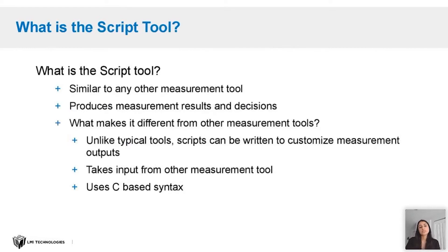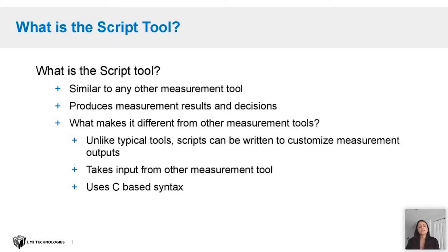So what is a script tool? A script tool is very similar to any other measurement tool we've seen or used in the GoCator interface. It produces measurement results and decisions. However, there is a key difference between the script tool and other measurement tools. Measurement tools are pre-designed to measure certain features and output specific outputs. Using script tools, users can write scripts that take measurements from other measurement tools to produce custom measurements. This gives users the liberty to make their own custom measurements depending on what's fit for their application. It uses C-based syntax and supports standard C operators.